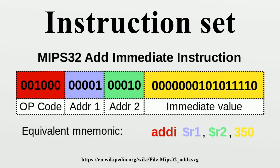Examples of operations common to many instruction sets include data handling and memory operations: set a register to a fixed constant value, copy data from a memory location to a register or vice versa, and read and write data from hardware devices. Arithmetic and logic operations include add, subtract, multiply, or divide the values of two registers, placing the result in a register, possibly setting one or more condition codes in a status register.